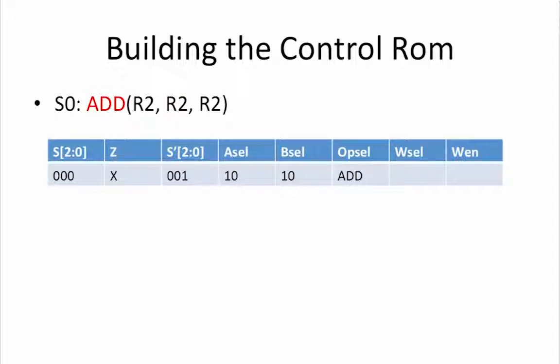The OPsel signal identifies which operation we want to perform. Since we have four distinct operations, we would need two bits to distinguish amongst them, and we would make each operation be associated with one of the four encodings. For simplicity, let's just label OPsel as add to indicate that we selected the encoding for the add. The register we want to write our result to, also known as the destination register, is R2 for this operation. This means that Wsel equals 10 and WN equals 1. WN is a signal that enables writing to the register file. If it is set to 0, then regardless of the value of Wsel, no value will be written into the register file.